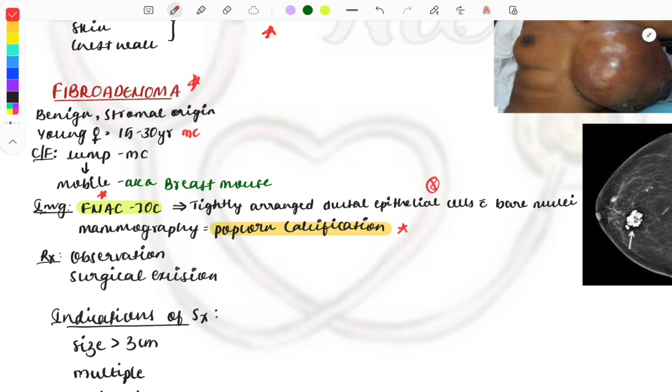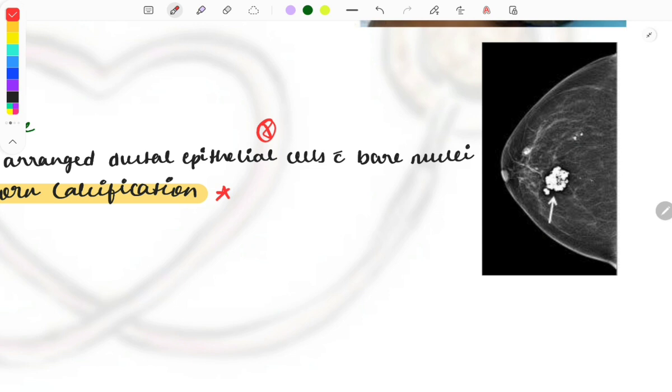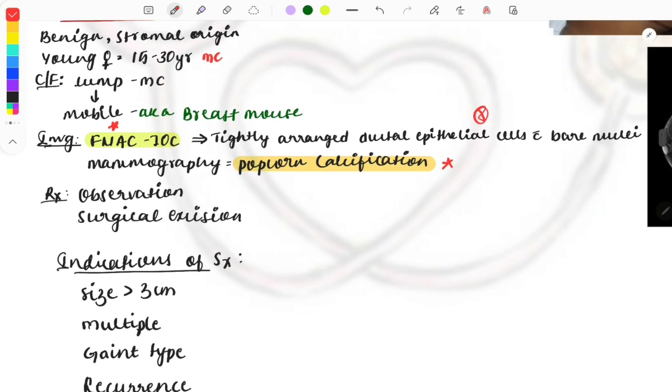On mammography, we can see popcorn calcification. You can see here a mammography image showing popcorn-like calcification in the breast. This can be asked as an image-based question.